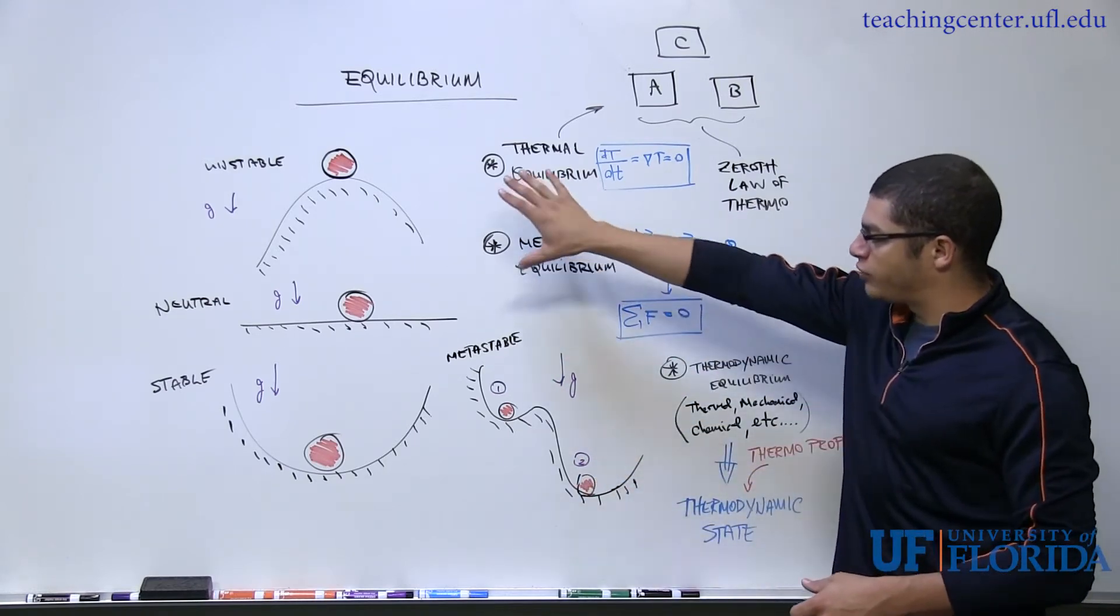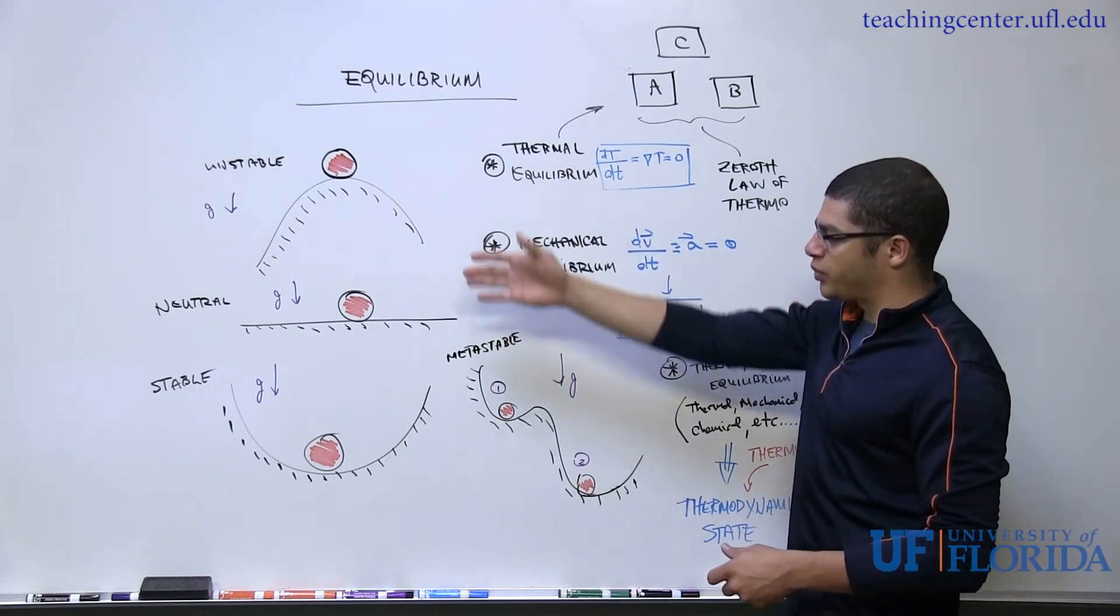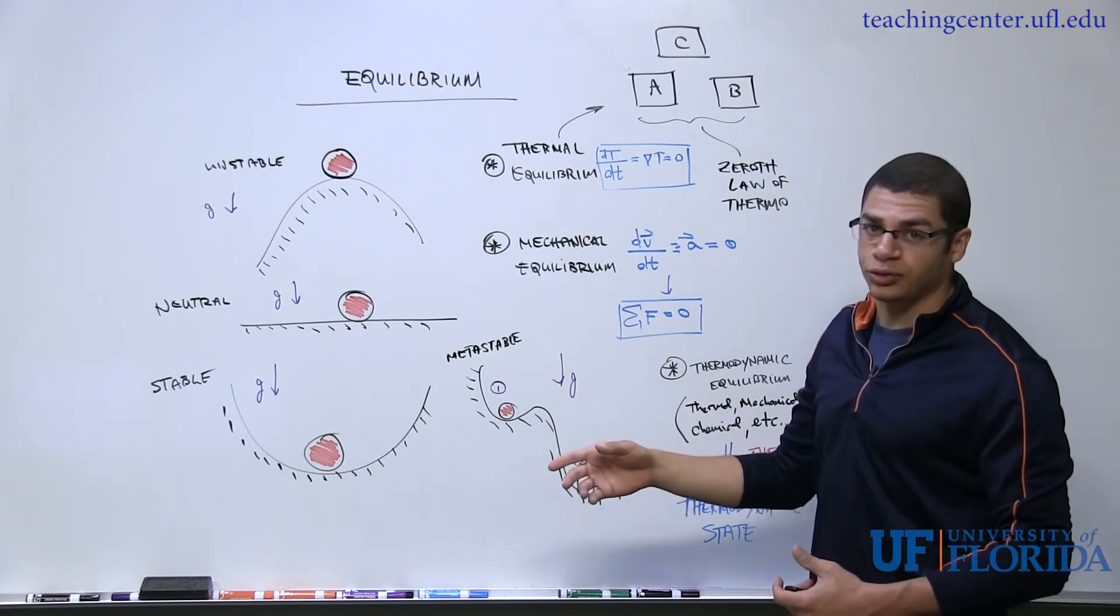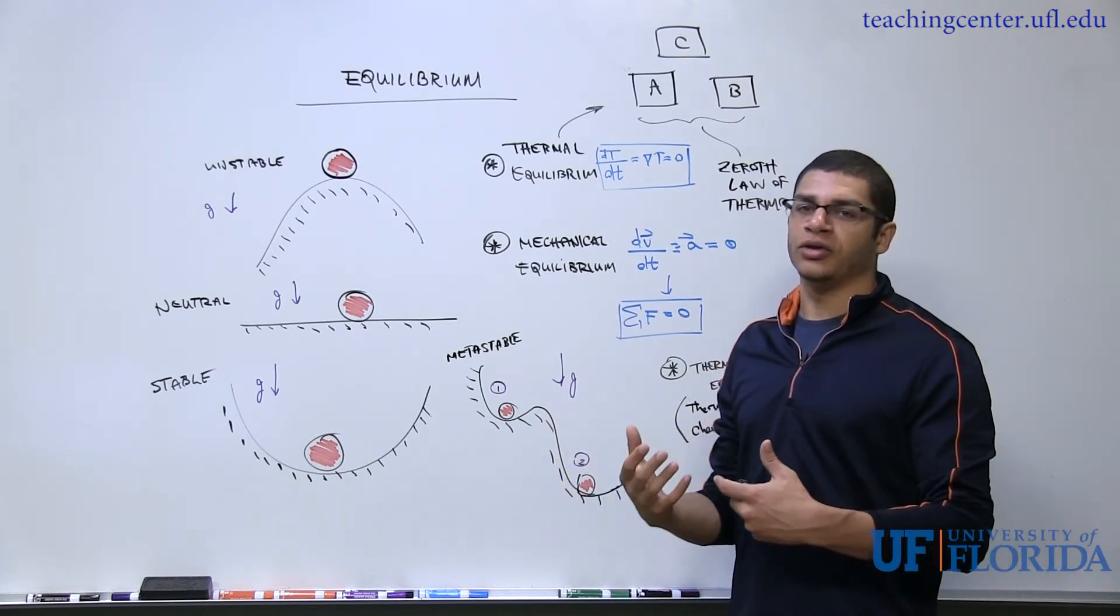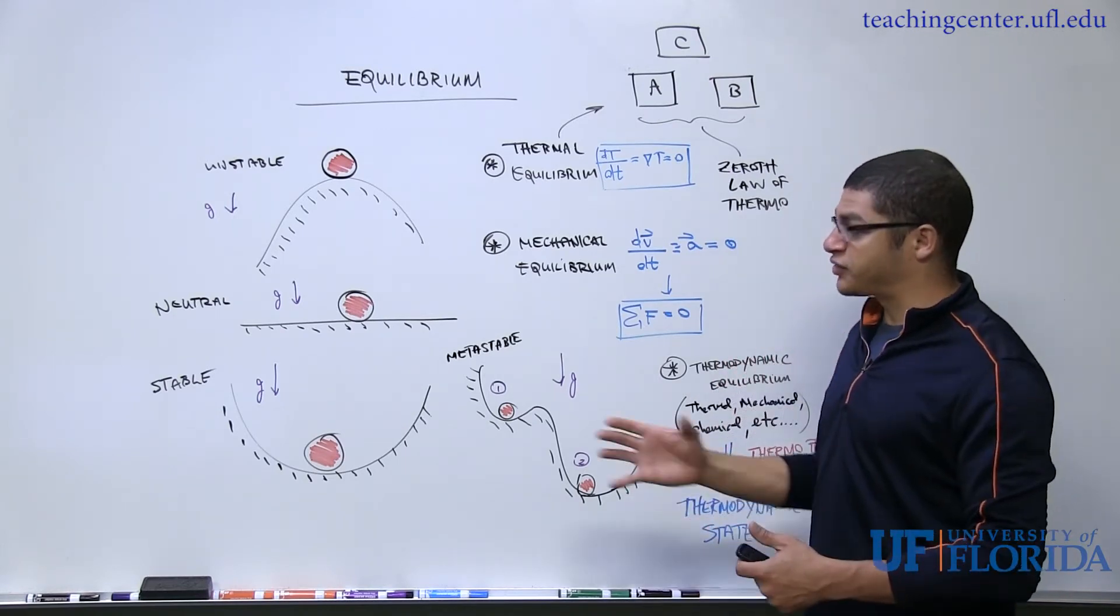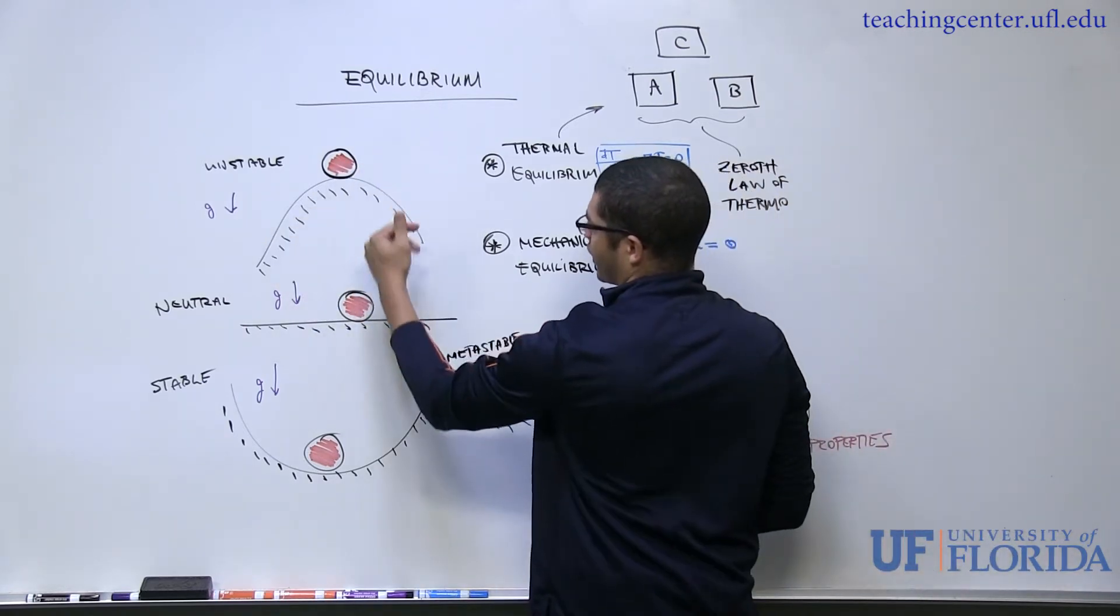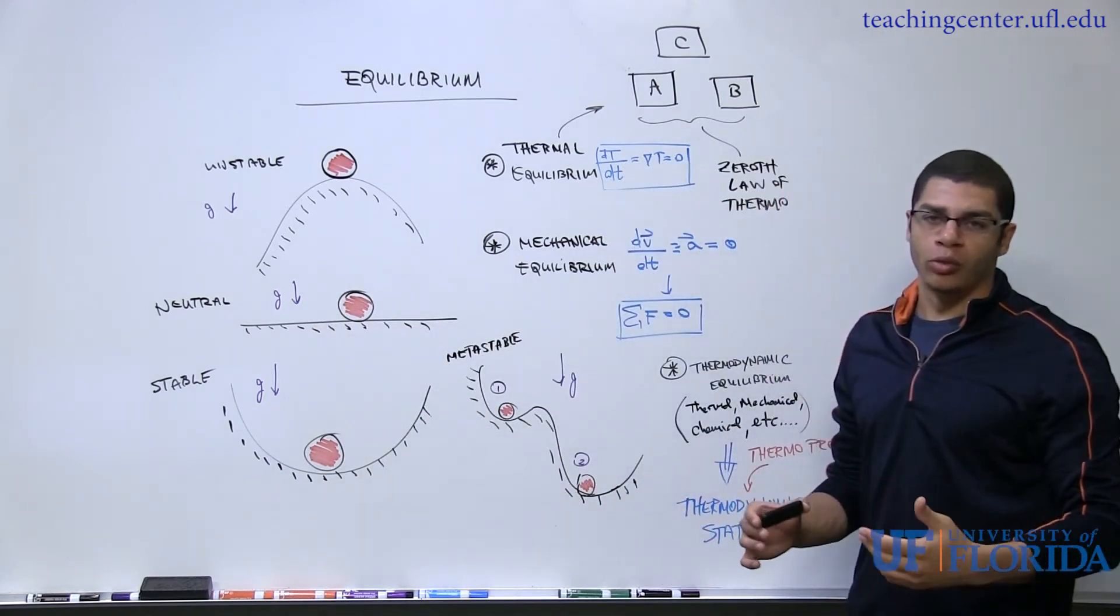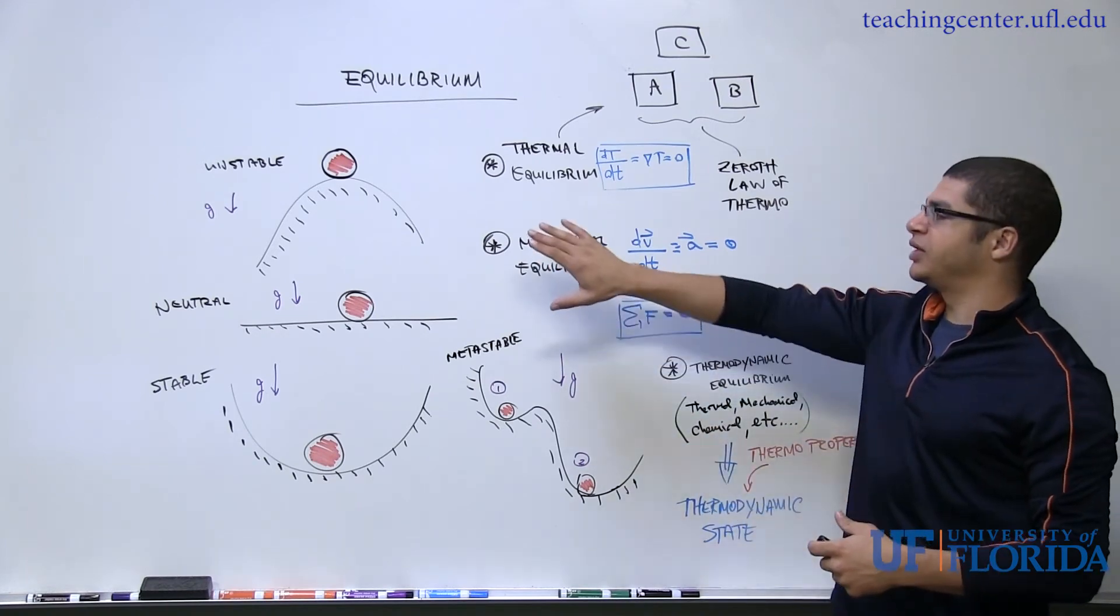And so what I've drawn inside here is just an example using a ball supported by different geometric structures within a gravitational field to illustrate different ways we can perturb a system from equilibrium. In this case, mechanical equilibrium. So initially, the ball is in mechanical equilibrium with the structure. It's got a weight vector pointed down, and there's a normal force pointing up. So in the y direction, it's stable.